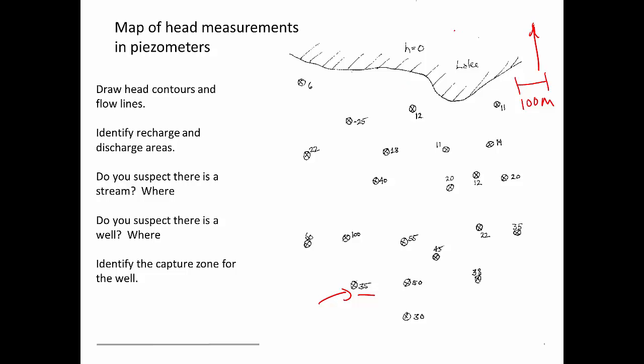Up at the north part of the map we've got the edge of a lake here, right there, and this is the head in the lake. In this case, the stage of the lake is serving as a reference for the head, so it has a head of zero right there.